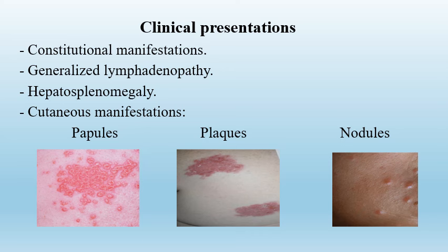Sarcoidosis is a multisystem disorder with variable clinical presentations. It includes constitutional manifestations in the form of fever, weight loss, loss of appetite, generalized lymphadenopathy, and hepatosplenomegaly. Cutaneous manifestations include variable types of rashes such as papules, plaques, or nodules.